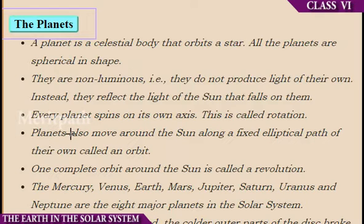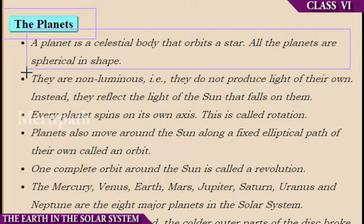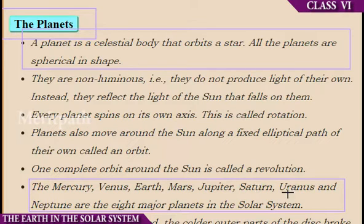The planets. A planet is a celestial body that orbits a star. All the planets are spherical in shape. There are eight planets in the solar system. They are Mercury, Venus, Earth, Mars, Jupiter, Saturn, Uranus, and Neptune.